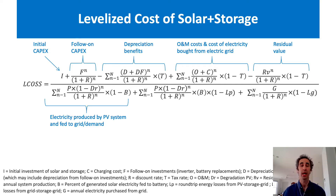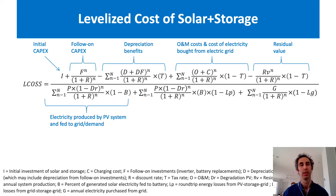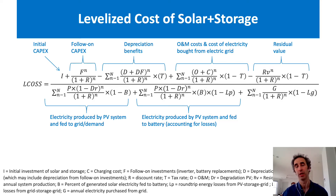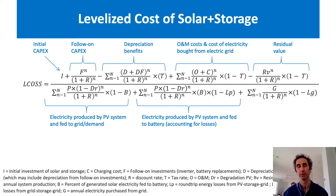In the denominator, we have the electricity produced by the PV system and fed to the grid or demand source. We also have electricity produced by the PV system and fed to the battery, which accounts for any losses from taking the electricity, putting it into the battery, and then eventually going to the grid or demand source.